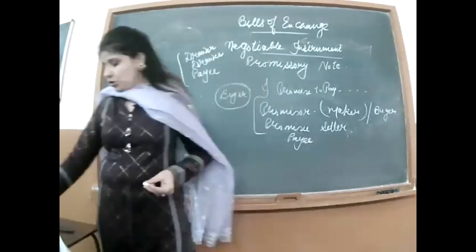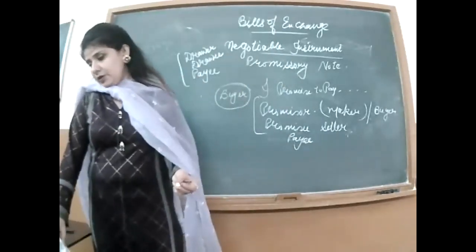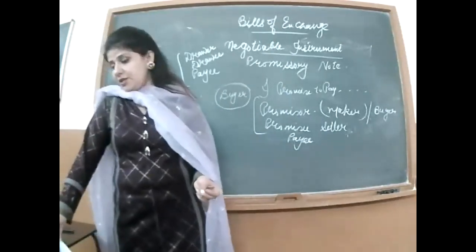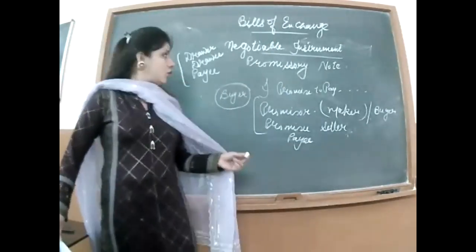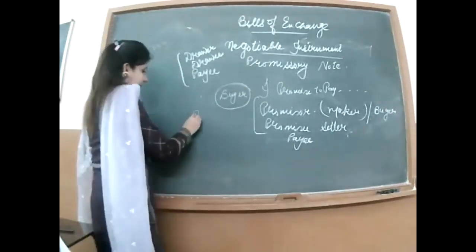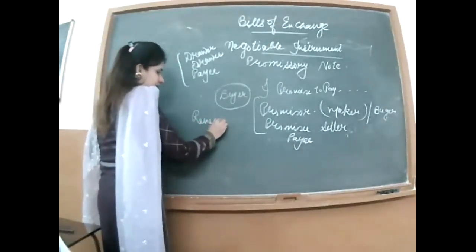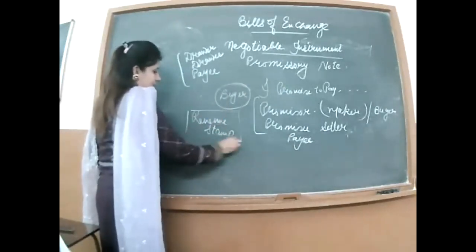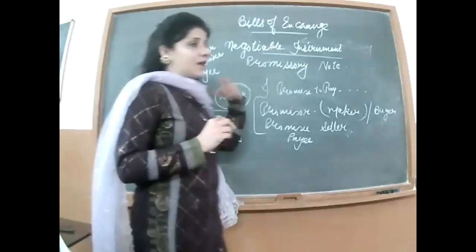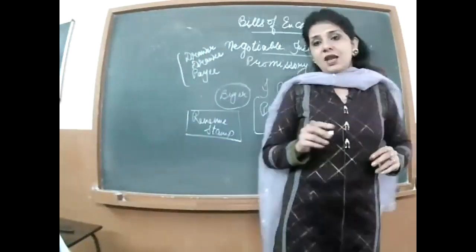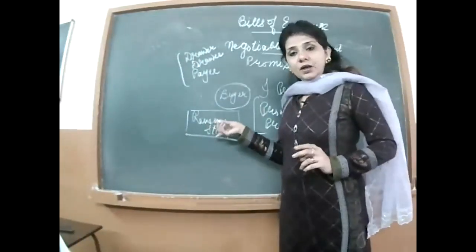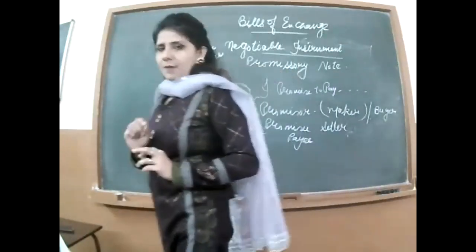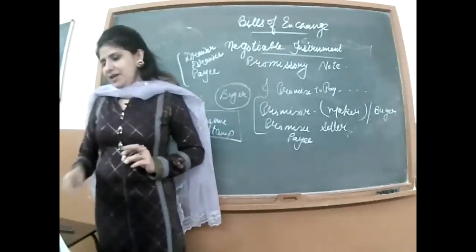Seventh, the payee must also be certain — aap kisko promise kar rahe ho, voh clear hona chahiye. Eighth, the promissory note must be properly stamped — a revenue stamp must be affixed. Revenue stamp post office mein milti hai. Sare legal documents pe revenue stamp paste karte hain to make them legal.